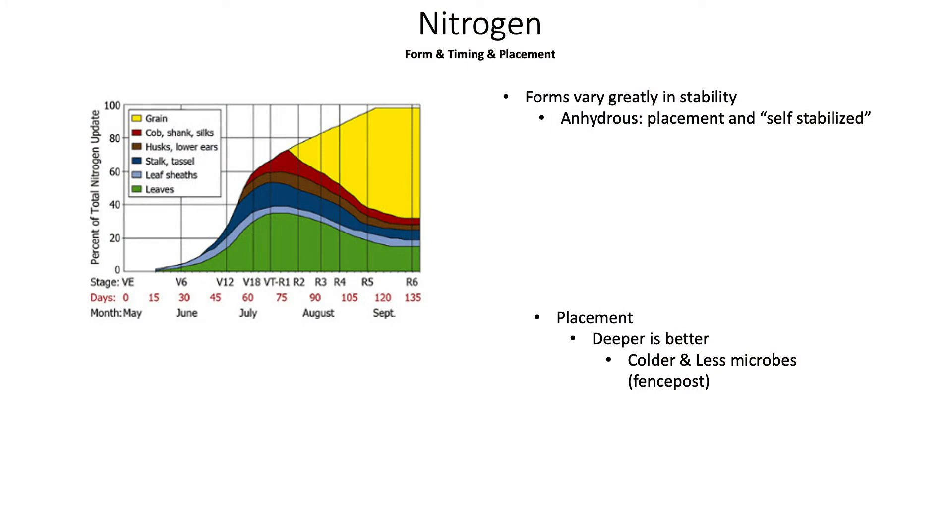For those of you that used to fix fence, where does that fence post rot off at? It rots off right there at the soil surface, because that's where the soil warms up more quickly in the spring and where the highest oxygen levels are in our soil profile. Those two things really drive microbial activity. It's the same microbial activity that rots off a fence post that also converts our commercial fertilizer to nitrate — and once it's in the nitrate form is when we can lose it.